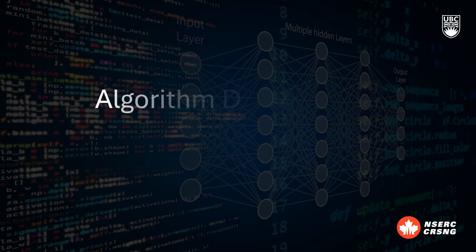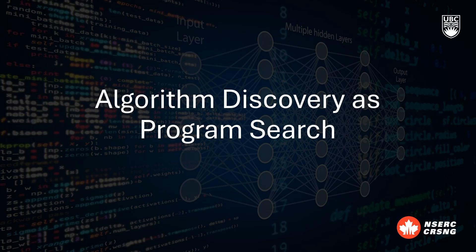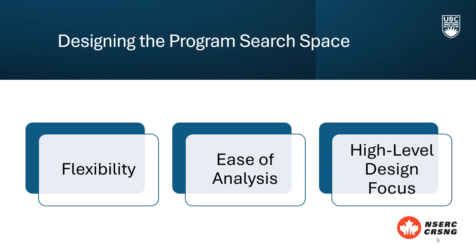Next, let's look at how algorithm discovery can be approached as program search. For designing the program search space, we follow three main criteria. First, the search space needs to be flexible to uncover novel algorithms. Second, the programs should be easy to analyze and fit into existing machine learning workflows. Finally, we focus on high-level algorithmic design rather than getting bogged down by low-level implementation details. This approach ensures a broader and more effective exploration of potential optimizers.